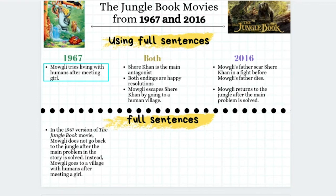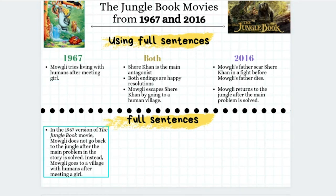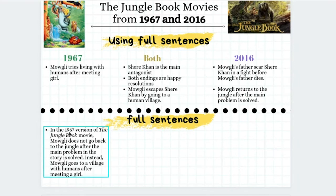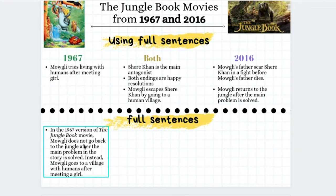The reason why we know what we're talking about is because we've watched footage of these two movies, so it makes sense to us. But if somebody was reading our writing, we would want them to understand us. So our full sentences say: 'In the 1967 version of the Jungle Book movie, Mowgli does not go back to the jungle after the main problem and the story is solved. Instead, Mowgli goes to a village with humans after meeting a girl.' This gives them full context of what year it happened in and what movie it was.